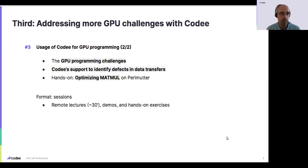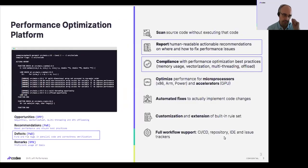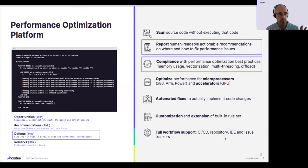So let's start with Lab 3. We saw a set of GPU challenges that we need to address, and today we will see how we can use Kodi to identify defects in GPU code — particularly defects in data transfers coded using OpenMP or OpenACC pragmas that look correct but are actually incorrect. From the actions in the performance optimization report produced by Kodi — opportunities, recommendations, defects, and remarks — today we will focus on defects.